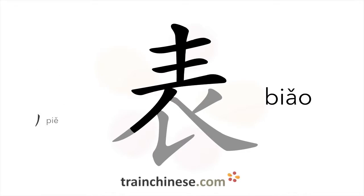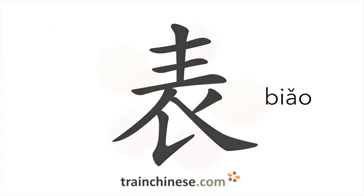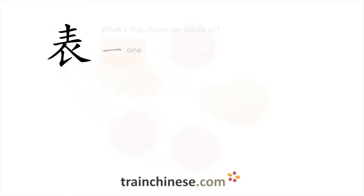撇 — left-falling stroke. Let's look at how this character breaks down. The radical in this character means one.